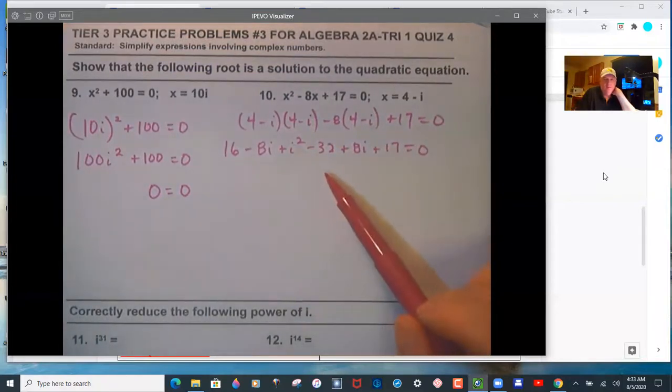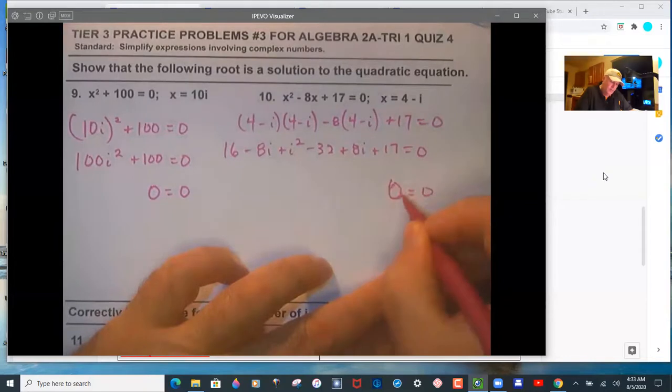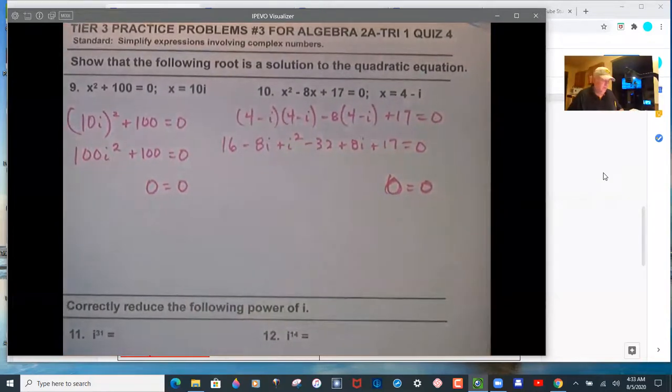I need to see all of those. So this will be 15 minus 32, negative 17, plus 17 is 0, negative 8, plus 8 is 0. This is going to be correct. But I'm looking for all of those expanded correctly.